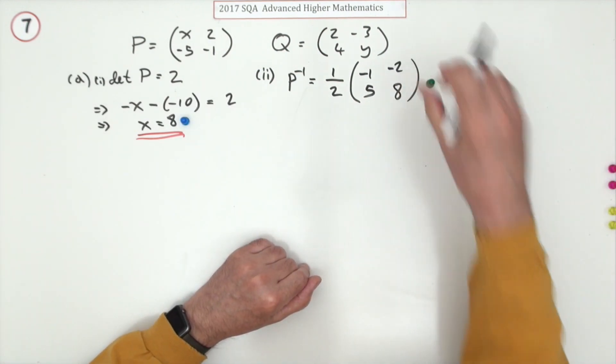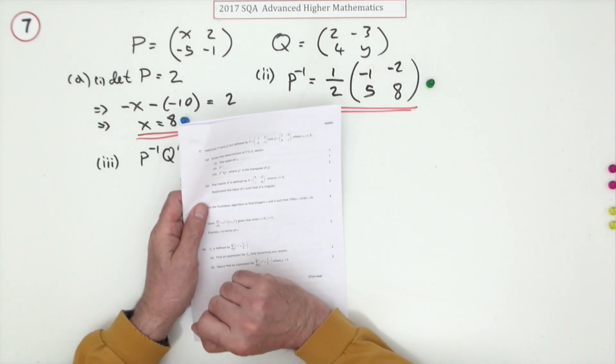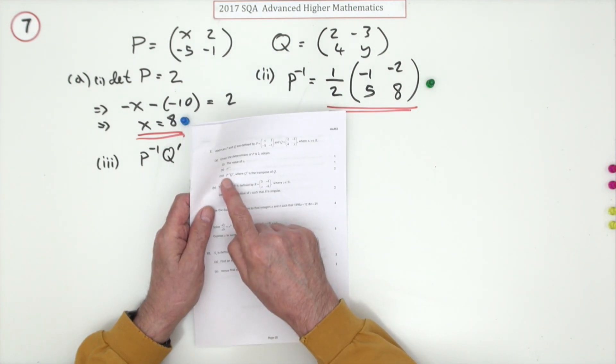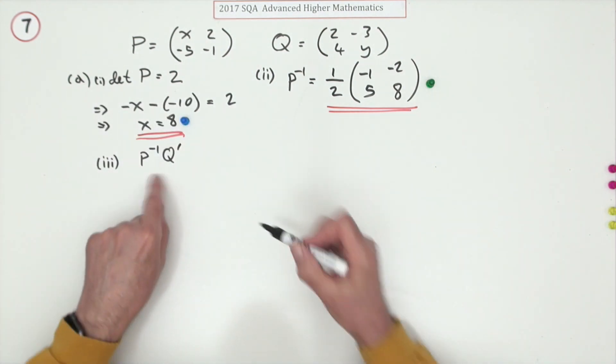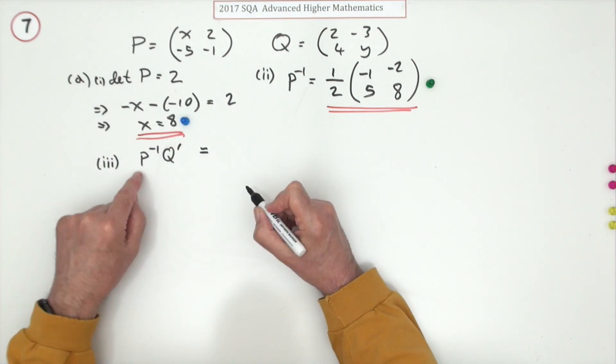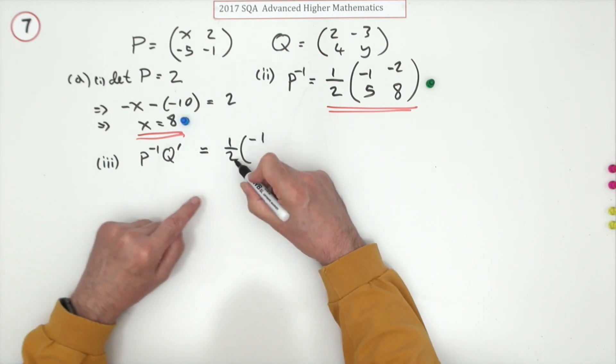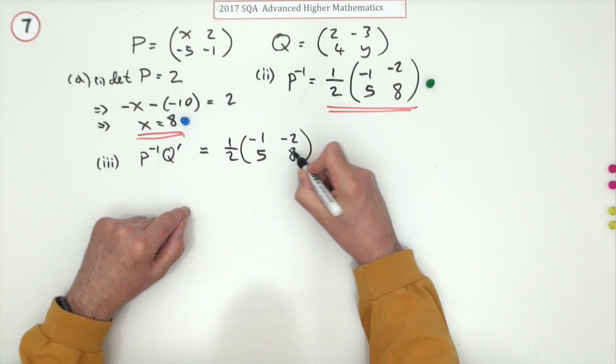Part three, now for two marks: what's this product, the inverse of P multiplying the transpose of Q? Remember to keep them in the same order. Well, you know the inverse of P. It's handy having that two as a half outside. If it wasn't outside, I'd probably bring it outside.